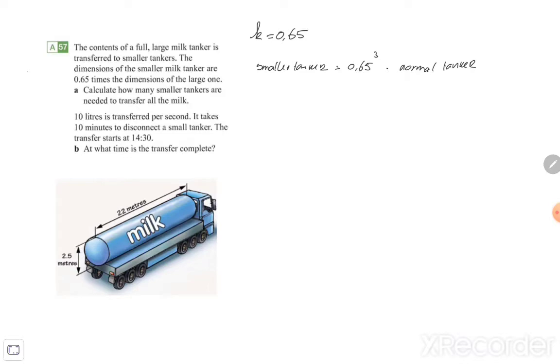So we can calculate 0.65 to the power of 3, of course, because that's 0.274625. But you can even leave it, if you like, as 0.65 cubed times the normal tanker, and it's still the smaller tanker.